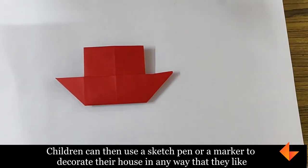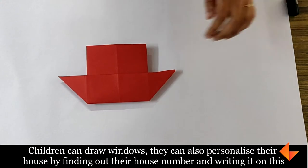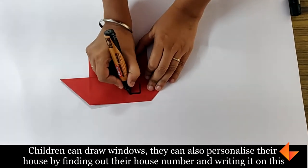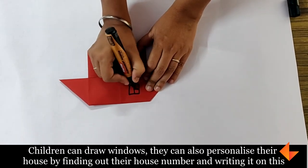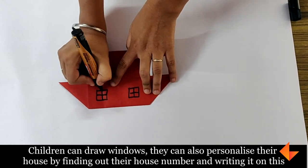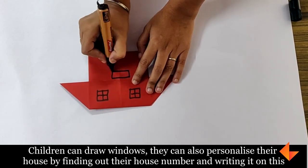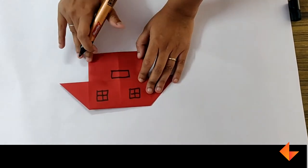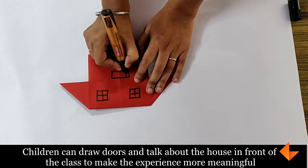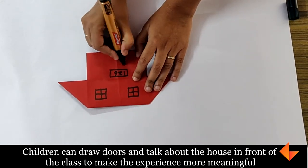Children can then use a sketch pen or marker to decorate their house in any way they like. Children can draw windows. They can also personalize their house by finding out their house number and writing it on what they have made. For example, children can draw doors.